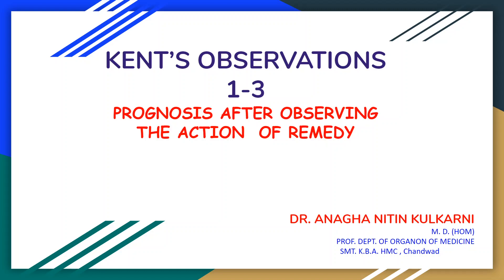Hello dear all. Today I am going to discuss Cain's observations 1 to 3 with you. The title of Cain's chapter is 'Prognosis after observing the action of remedy.' All of you know that there are 12 observations given by Dr. James Tyler Cain. In today's presentation, we will see the first 3 observations given by Dr. Cain.